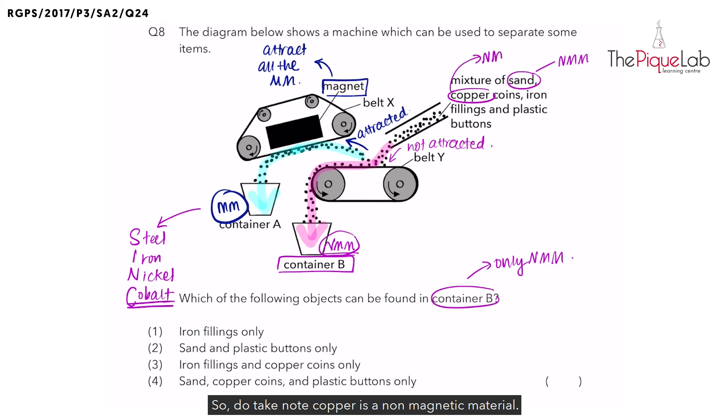Copper is a non-magnetic material. How about iron? Yes, iron is a magnetic material. And how about plastic? Plastic is a non-magnetic material. So the non-magnetic materials in the mixture would be sand, copper, and plastic buttons. And since only non-magnetic materials can be found in container B, these are the objects that will be found in container B: sand, copper coins, and plastic buttons only. Therefore the answer is number four.